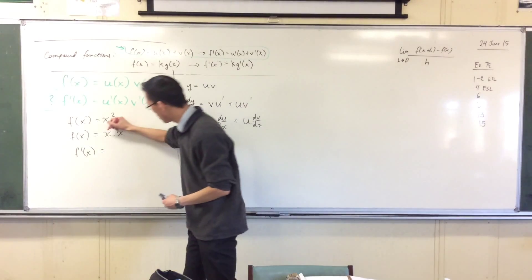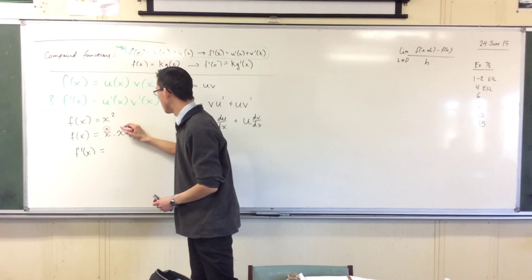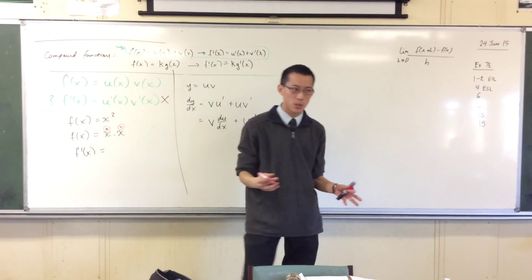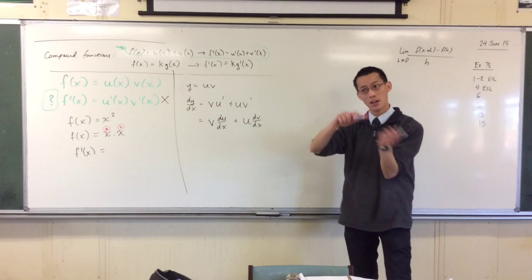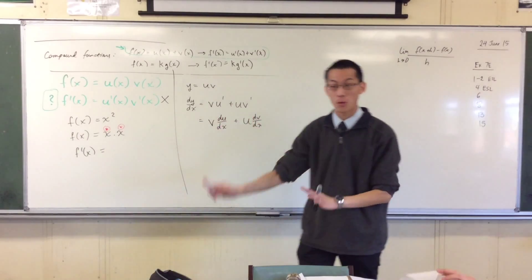I just designate one of them u, call that one u, and then I designate the other one v. It doesn't matter which one's which because our product multiplication is commutative, so I'm gonna change the order. In this case u and v are either ones, right?